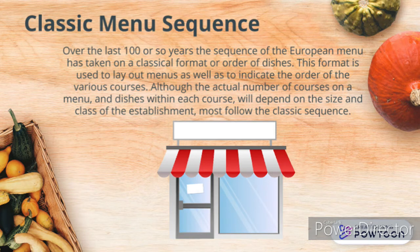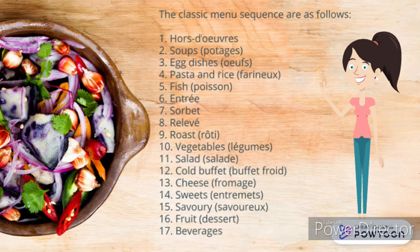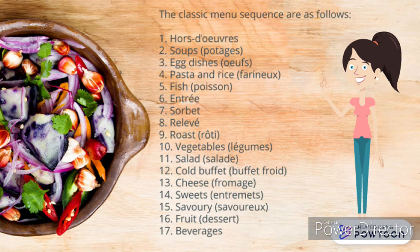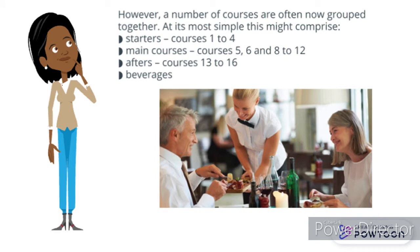The classical menu sequence has 17 courses. In order, they are: hors d'oeuvres, soup (potage), egg dishes, pasta and rice (farineux), fish, entrée, sorbet, relevé, roast, vegetables (légumes), salad, cold buffet (buffet froid), cheese (fromage), sweets (entremets), savory, fruit, dessert, and beverages. These are the classic menu sequence terms, mostly in French.